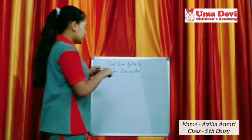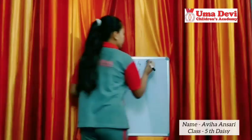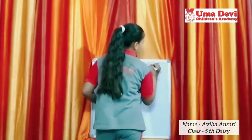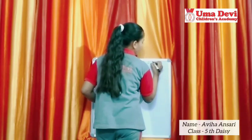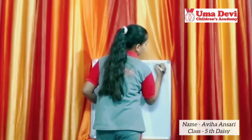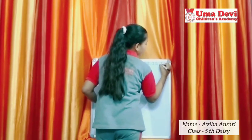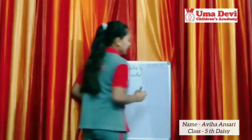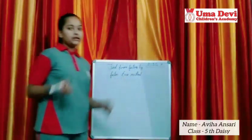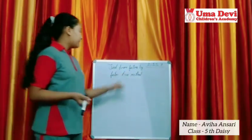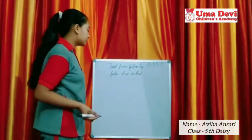First of all, let us write the first four prime numbers here, so that we can see them. They will help us in the factor tree method.